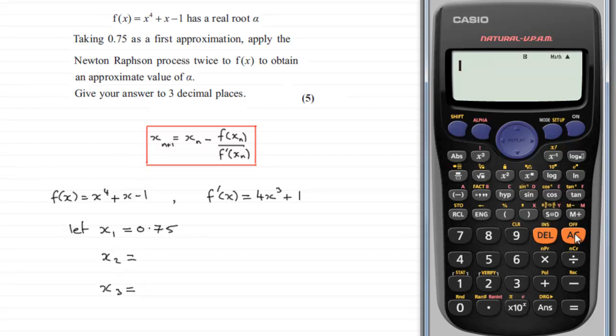So we clear the screen and we enter Newton-Raphson's formula. Only in place of any x subscript n, we just enter answer.